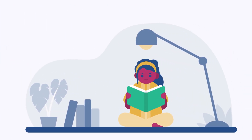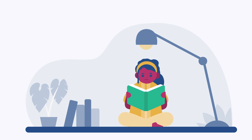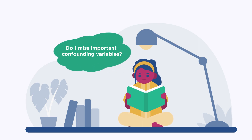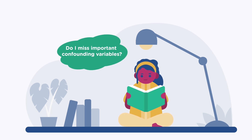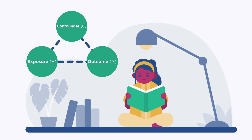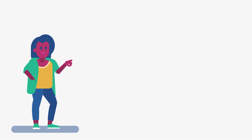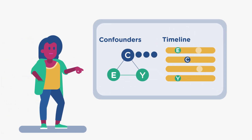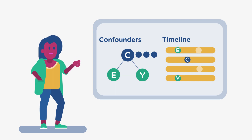To conclude, when you next read about a study that makes claims about causal effects, carefully assess if the authors thought about possible confounders and consider if the study properly adjusted for them. If you are setting up a study that looks at causal effects, make sure you have taken all possible confounding factors into account and made adjustments in your design to accommodate for them. Remember that a drawing including all of the relationships and a timeline can be very helpful in judging whether confounders were properly addressed.